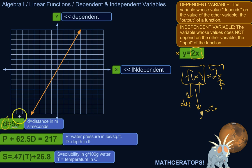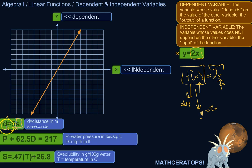So the distance that I go depends on how long I'm traveling. If I go five meters per second for 60 seconds, I've gone 300 meters. So the distance — what I get for a distance — depends on how long I'm traveling at five meters per second. So distance would be the dependent variable; it depends on how many seconds I go. And seconds, therefore, would be the independent variable.